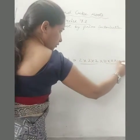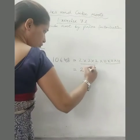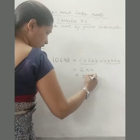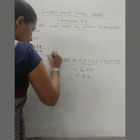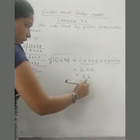So we will make pairs of 3, 3 means triplets we will make. So what we get: 2 into 11 that is 22. So what we will write that cube root of 10,648 is 22.